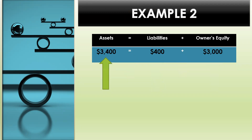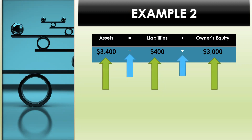In example two, assets are $3,400, liabilities is $400, and owner's equity is $3,000. The accounting equation here is in balance. Each side equals $3,400.